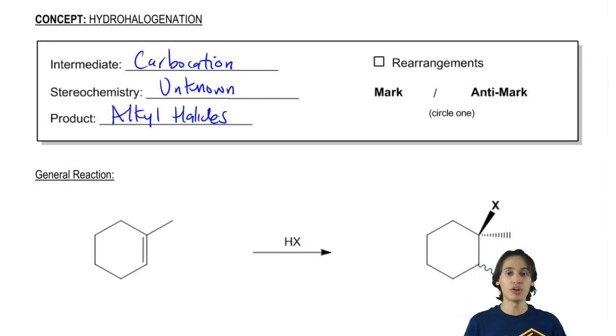Now let's talk about rearrangements. This is basically a checkbox. Could we expect carbocation rearrangements or not? And the answer is that any time you have a carbocation intermediate in your mechanism, you always need to be thinking about rearrangements. So this is going to get a huge checkmark because of the fact that, yeah, we have carbocation and intermediate so we would expect that you have to be able to shift if it wants to.